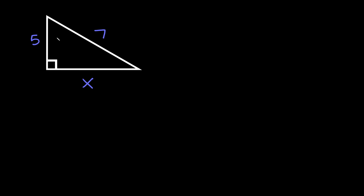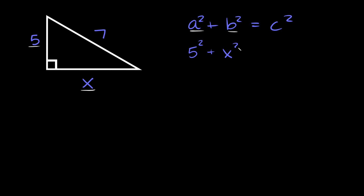Now this problem is going to be a little bit different, because this time we know the length of the hypotenuse but we don't know the length of one of the sides. We can still solve this using the Pythagorean theorem: a squared plus b squared equals c squared, where a and b are the two short sides. So 5 and x are the legs, and 7 is the hypotenuse — that's c. So we're going to get 5 squared plus x squared is equal to 7 squared.